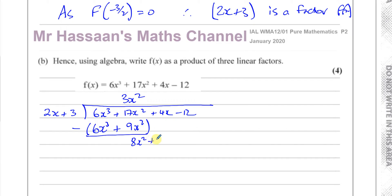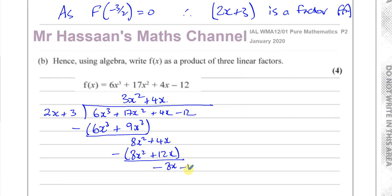Then I bring down the next term, which is 4x. How many times does 2x go into 8x squared? 8x squared divided by 2x is plus 4x. Then 4x times 2x is 8x squared, and 4x times 3 is plus 12x. Subtracting: this gives zero, and 4x minus 12x is negative 8x. Bring down the next term, which is minus 12. Then minus 8x divided by 2x gives minus 4, and minus 4 times 2x is minus 8x, and minus 4 times 3 is minus 12. There is no remainder.